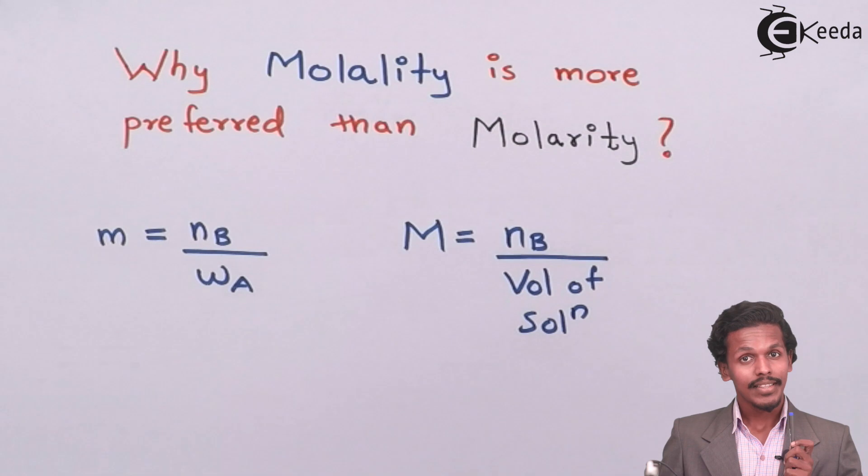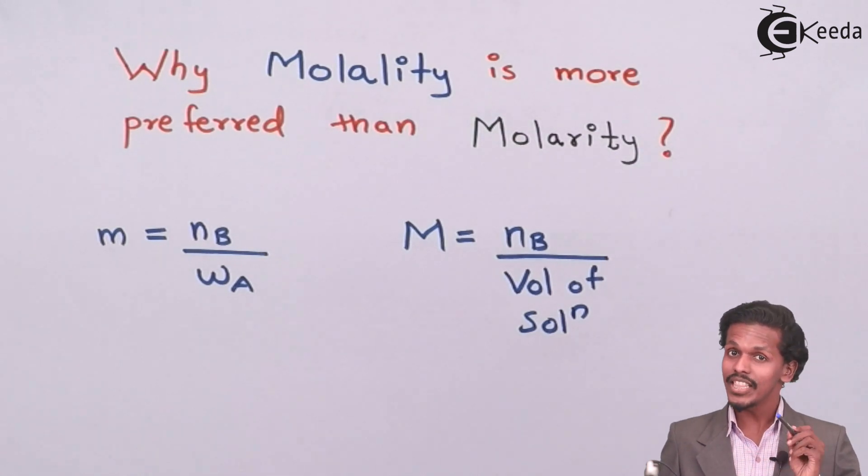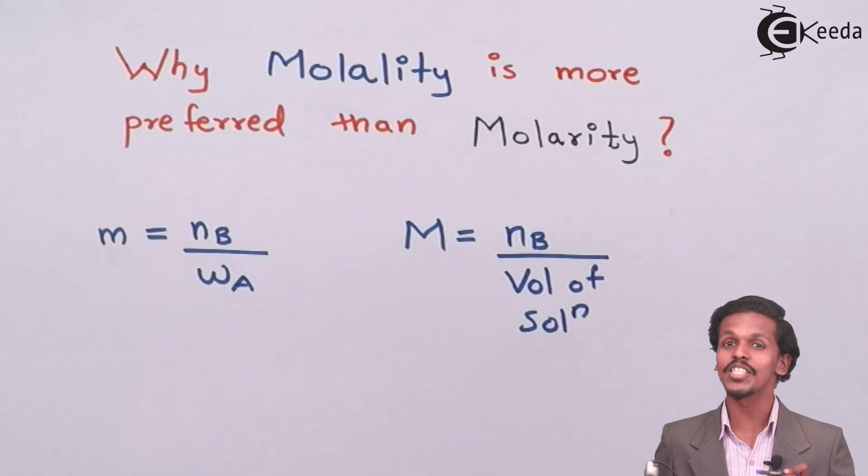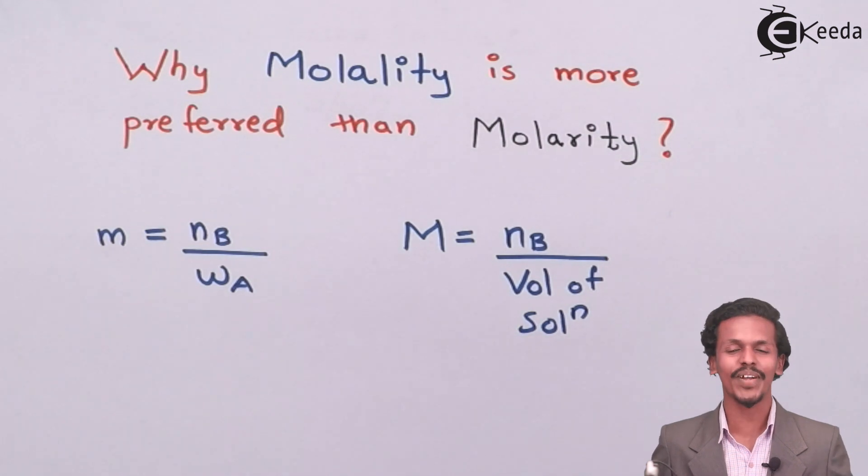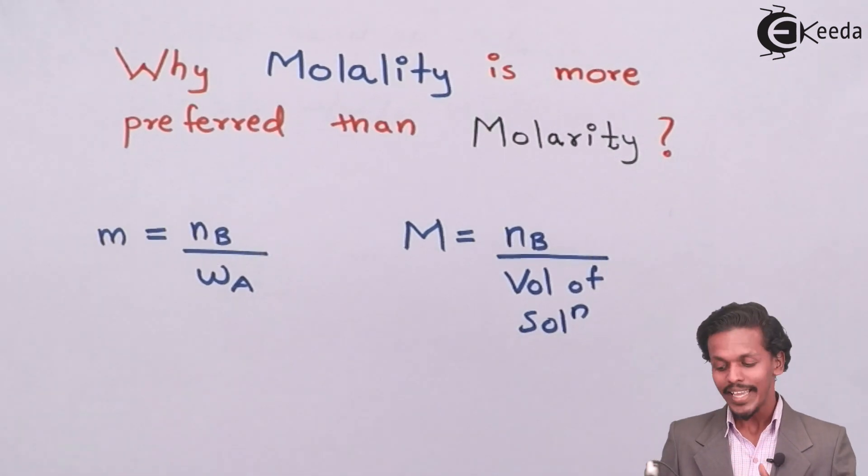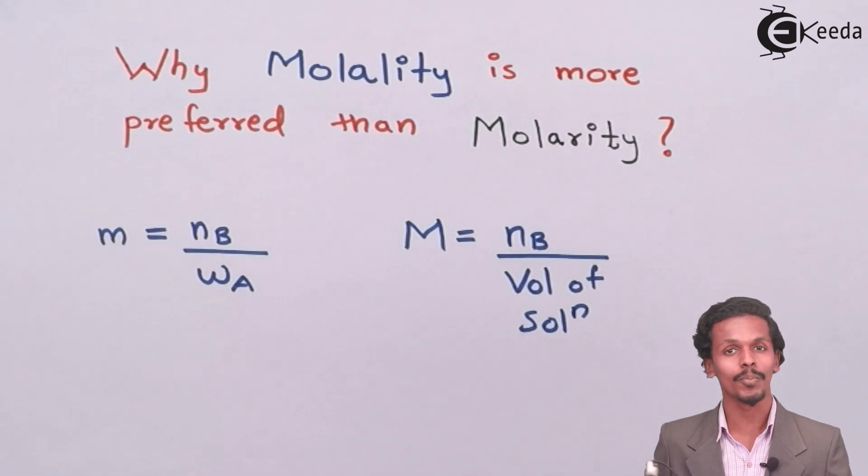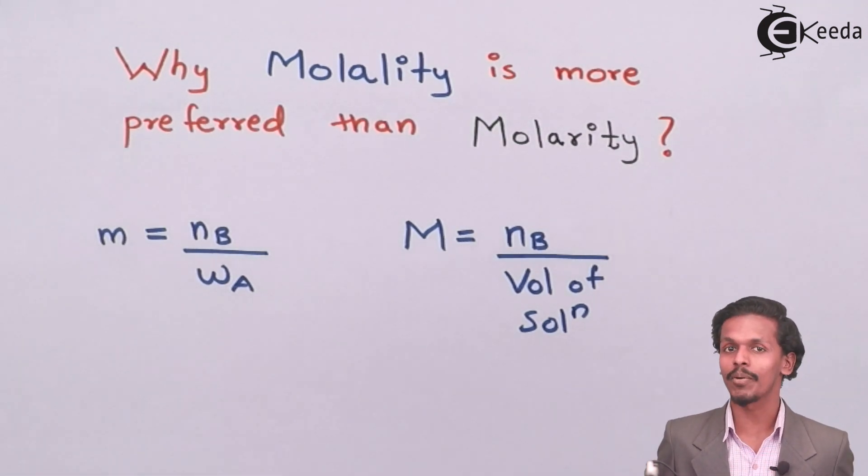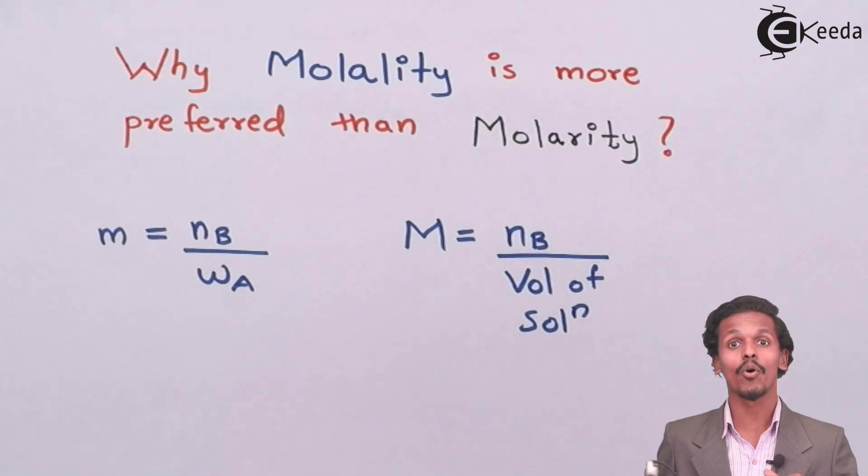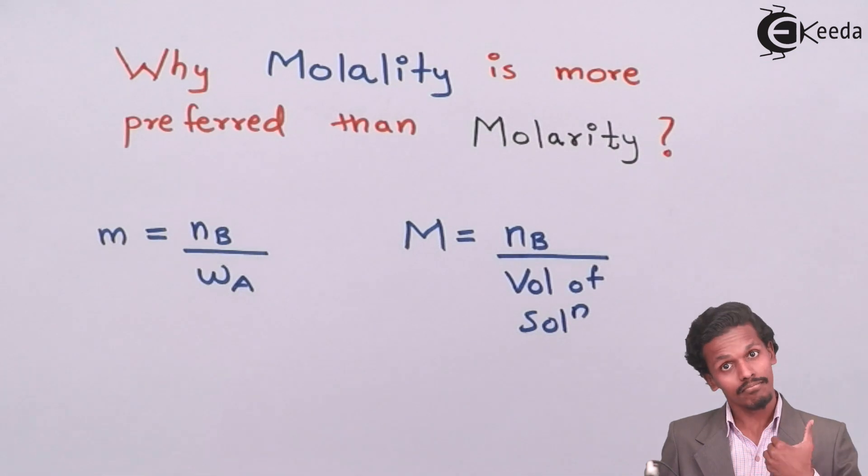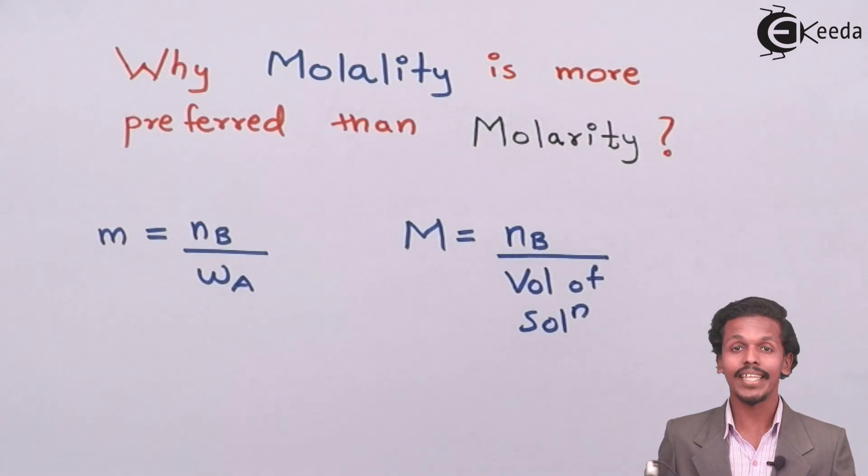And hence, the weight which is present in the formula of molality is more preferred because it has no effect of temperature. While in molarity, it has a parameter or function of volume and hence it can be affected by temperature. And hence, the volume can be changed because of temperature and the value of molarity can also change with temperature.